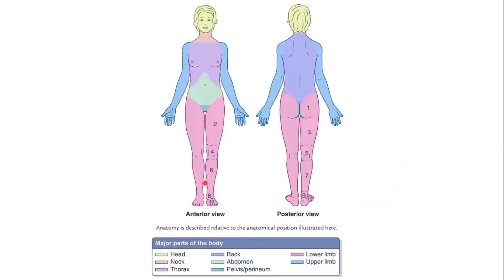Here you can see the anterior view and the posterior view, with major parts of the body shown in different colors. The head and back are visible, along with the lower limb and upper limb. This is the thorax, this is the abdomen, and this is the pelvis and perineum — follow the laser.